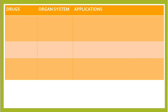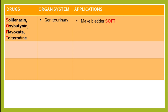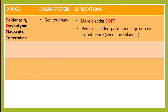There are also drugs acting on the genitourinary tract that relax the bladder: solifenacin, oxybutynin, flavoxate, and tolterodine. These drugs reduce overactive bladder and urinary incontinence.